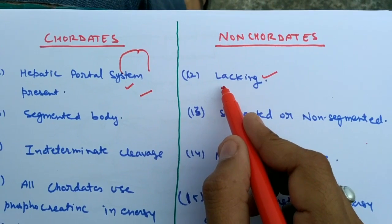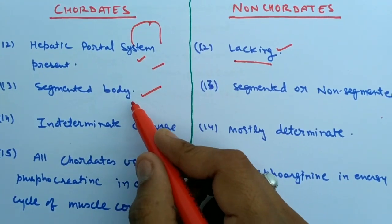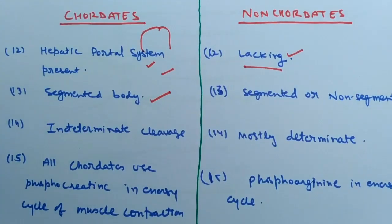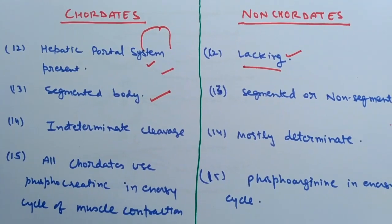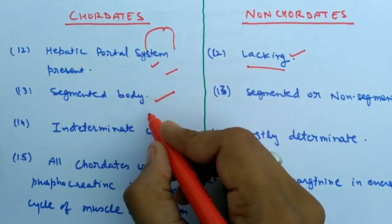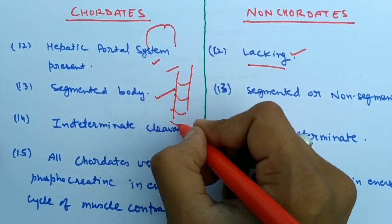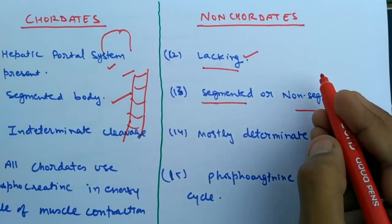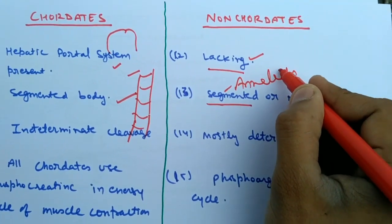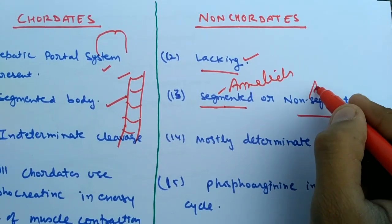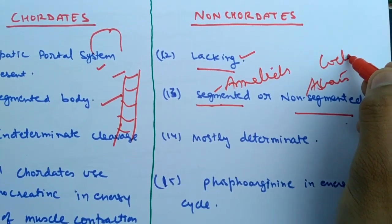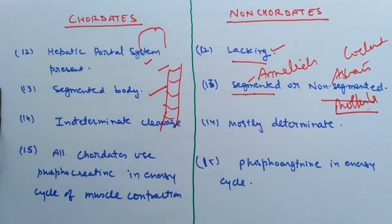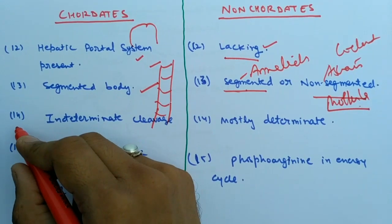There is no such hepatic portal system in non-chordates. Body segmentation always occurs in chordates — in our body there is the head, neck, thorax, abdomen, and the vertebral column is also segmented. In non-chordates, segmentation may or may not occur — metamerism is seen in annelids, while non-segmentation occurs in Ascaris, cylindrates, and Mollusca.